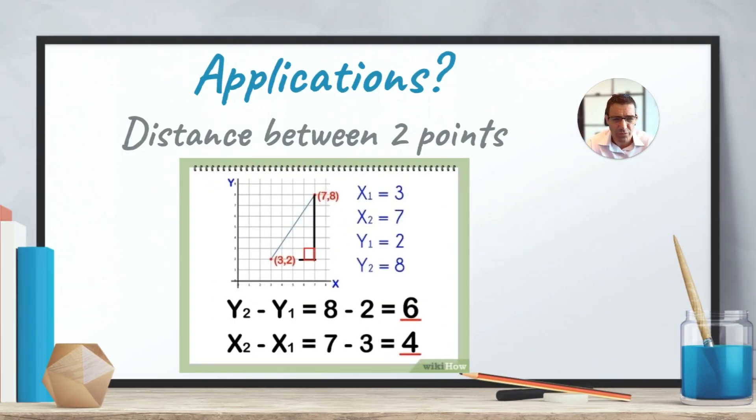And sure enough, if we draw a triangle here, so the triangle would have a vertical length on the side. The short length would be from 2 to 8, which is 6. And the horizontal length would be from 3 to 7, which is 4 here.